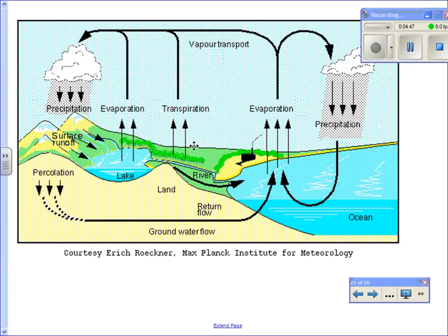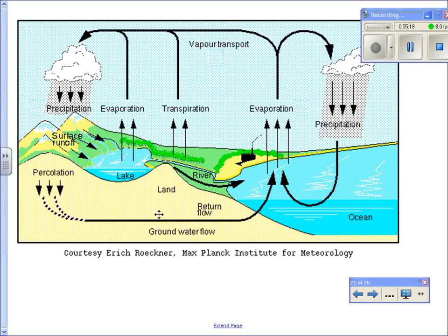In the water cycle, you have precipitation where water is falling. Then some of it is runoff — it runs across the surface and, in this example, goes into a lake. Some of the precipitation infiltrates through the underground, and then you have groundwater flow.